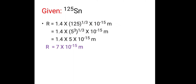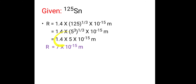We can write 125 as 5³, so we have 1.4 × (5³)^(1/3) × 10⁻¹⁵ meters. The exponents 3 and 1/3 cancel, leaving only 5. So r = 1.4 × 5 × 10⁻¹⁵ meters. This multiplication is very simple and does not require a calculator or log table. Therefore r = 7 × 10⁻¹⁵ meters, which is the radius of the nucleus.